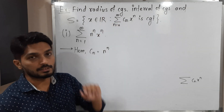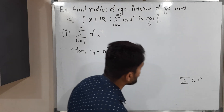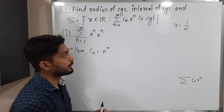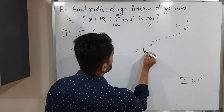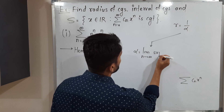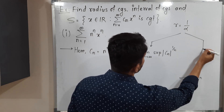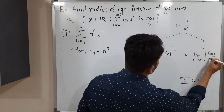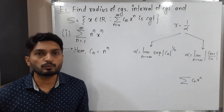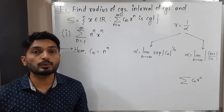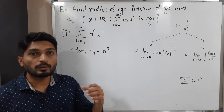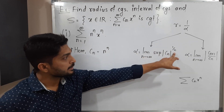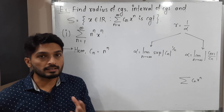Let us find the radius of convergence first. R means radius of convergence, and the formula is 1 by alpha. Alpha can be calculated in two different ways: the first way is limit n tends to infinity supremum of mod Cn raised to 1 by n, and the second is limit n tends to infinity mod Cn+1 upon Cn. Generally, when we have power n we go for the first formula, otherwise the second. When we have power n, it has power 1 by n, so n and 1 by n cancel each other and we easily get the value.